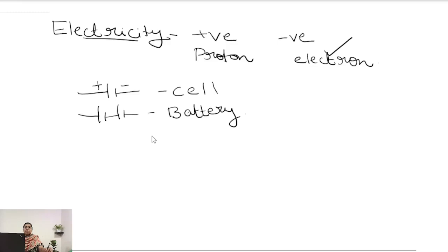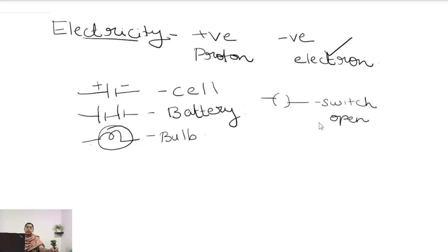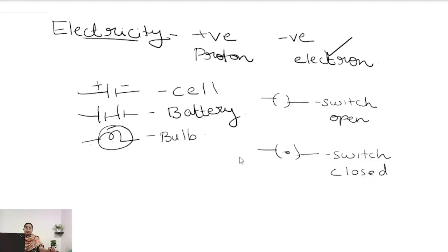Next we have to study the circuit symbol for the bulb. This is the circuit symbol for the bulb. Next we have to see the circuit symbol for the switch open. Switch open means the circuit is not complete and current cannot pass through the circuit. Next we have the circuit symbol for switch closed. Switch closed means the circuit is complete and the current can pass through the circuit. So these are the symbols related to the electric circuit.